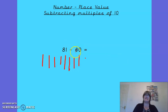How many do we need to take away? Well, this time it's asking us to take away 60. How many tens are in 60? Six tens. So I'm going to take away one ten, two tens, three, four, five, six. How many tens have I got left? One, two.